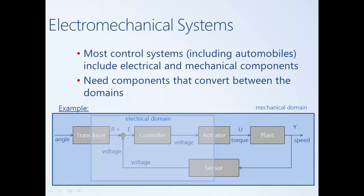For the purposes of discussion, let's presume that we have a cruise control system. The driver has some sort of knob on the dash to set the desired speed. He needs a device that converts the turning of the knob into an electrical signal readable by the electrical controller. That controller then generates a voltage which controls an electromechanical system — for example, a motor attached to the throttle valve — thereby allowing more or less air and fuel into the engine and changing speed. That speed, a mechanical quantity, then needs to be converted back into an electrical quantity to be read into the controller.